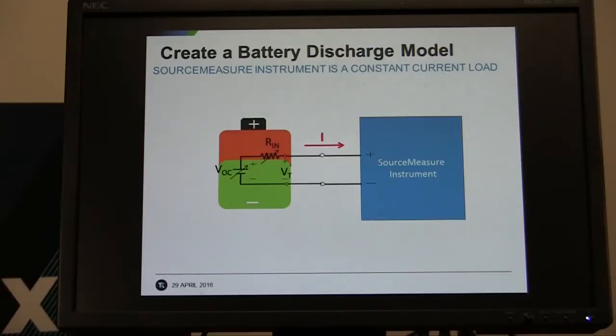The essence of this demo is that we're going to use the source meter, connect it up to a battery, and discharge the battery to create a battery discharge model. The source meter is used as a constant current load and discharges the battery from full to completely empty.